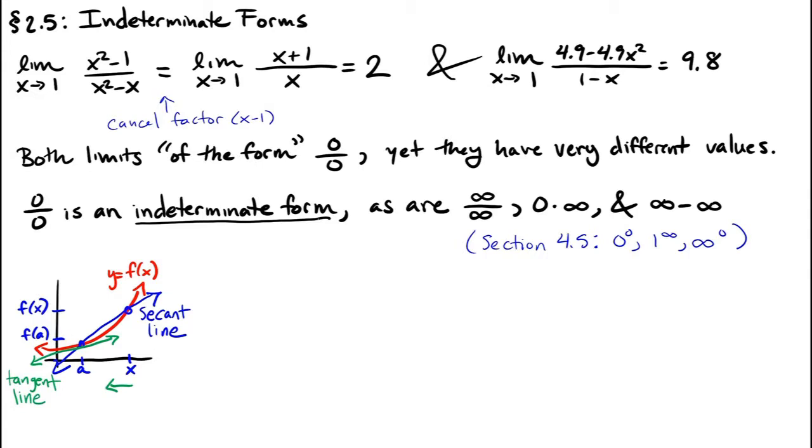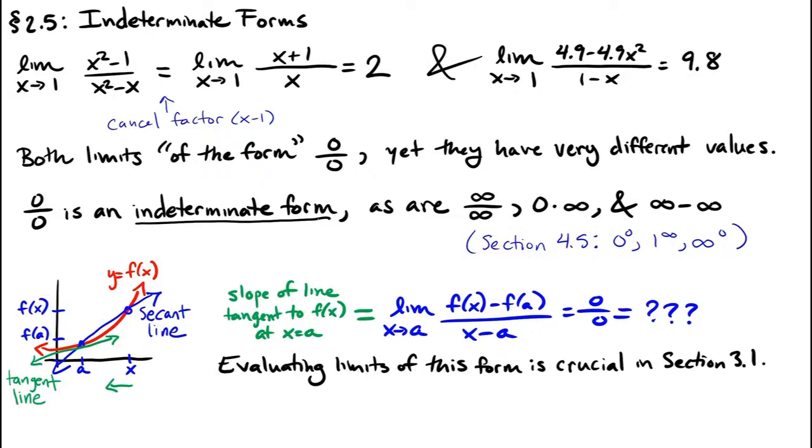How did we calculate that slope? Well, we said that the slope of the tangent line was just the limit of the slope of the secant line. And we can calculate the slope of the secant line by just looking at the rise, f(x) minus f(a), divided by the run, x minus a. Notice that this limit is of the form 0 over 0. That means whenever we try to calculate the slope of a tangent line, we're going to come up against one of these indeterminate limits, and we're going to need strategies for evaluating them. This will be crucial in section 3.1 when we develop this tangent line idea further.